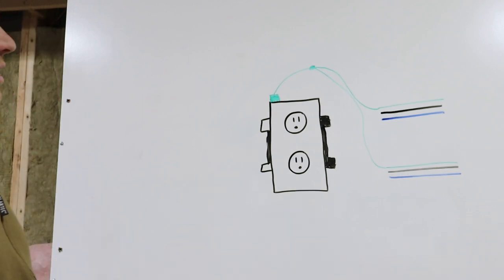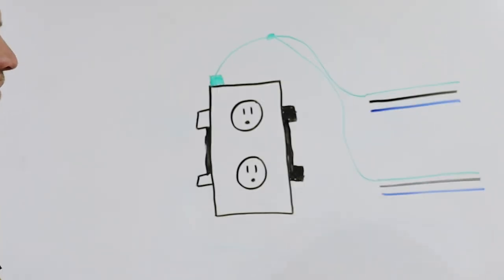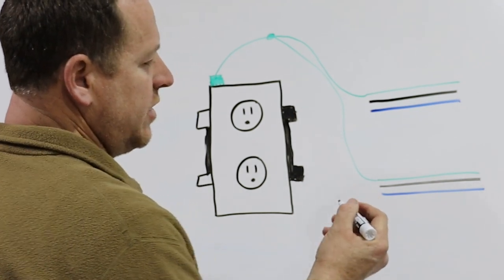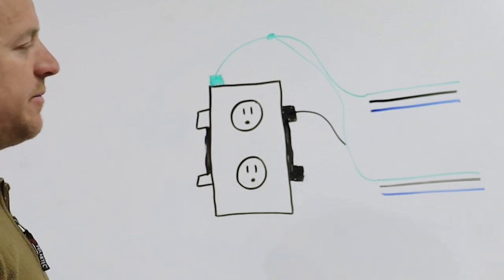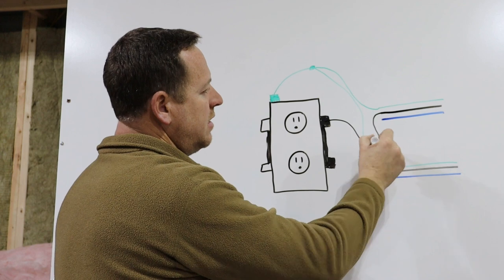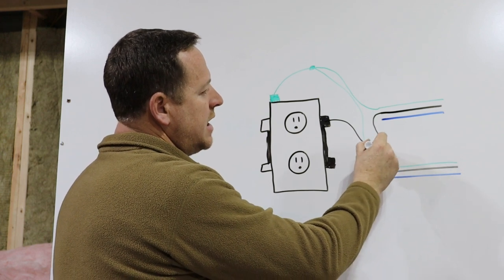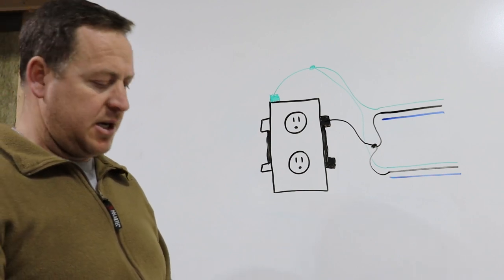To do this same principle with a neutral and a hot wire, you take about a six inch piece of wire, connect it to the proper screw, and then connect it up. You can either use a wire nut or one of the connectors I'm going to use.